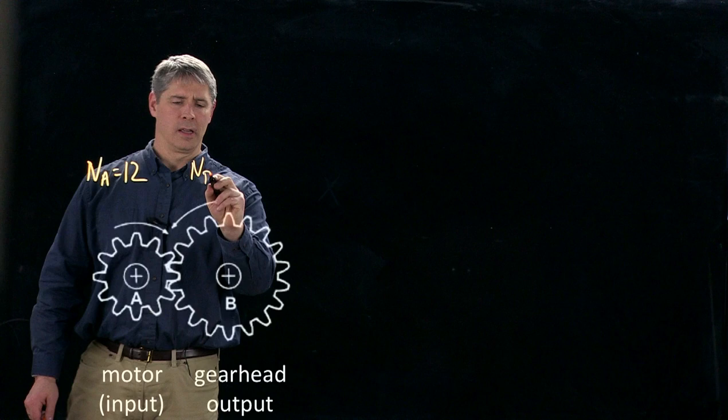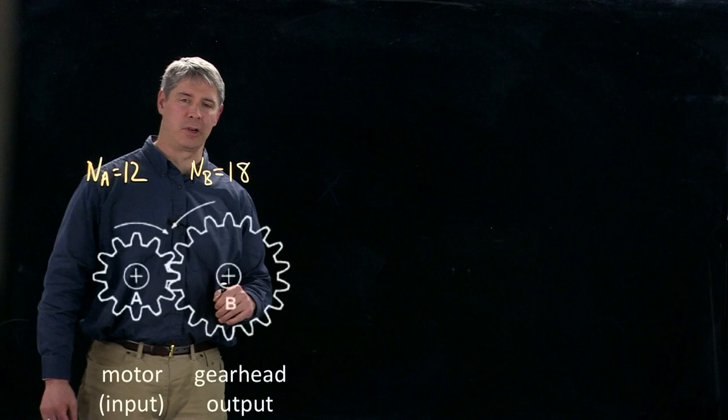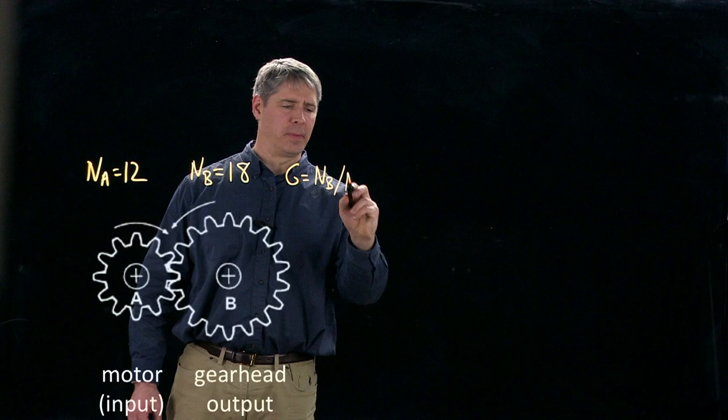So we're going to define the gear ratio for this gear head from this input shaft spinning on the motor to this output shaft, which is spinning more slowly, as G is equal to NB divided by NA, or 1.5 in our example.